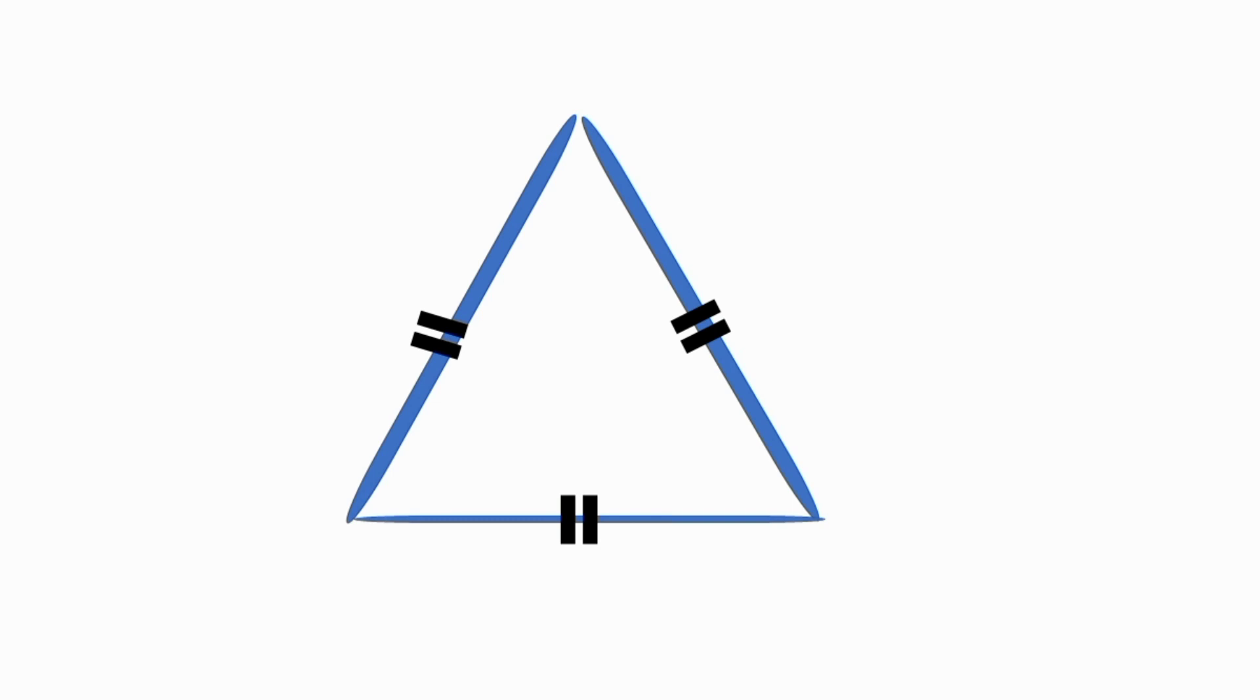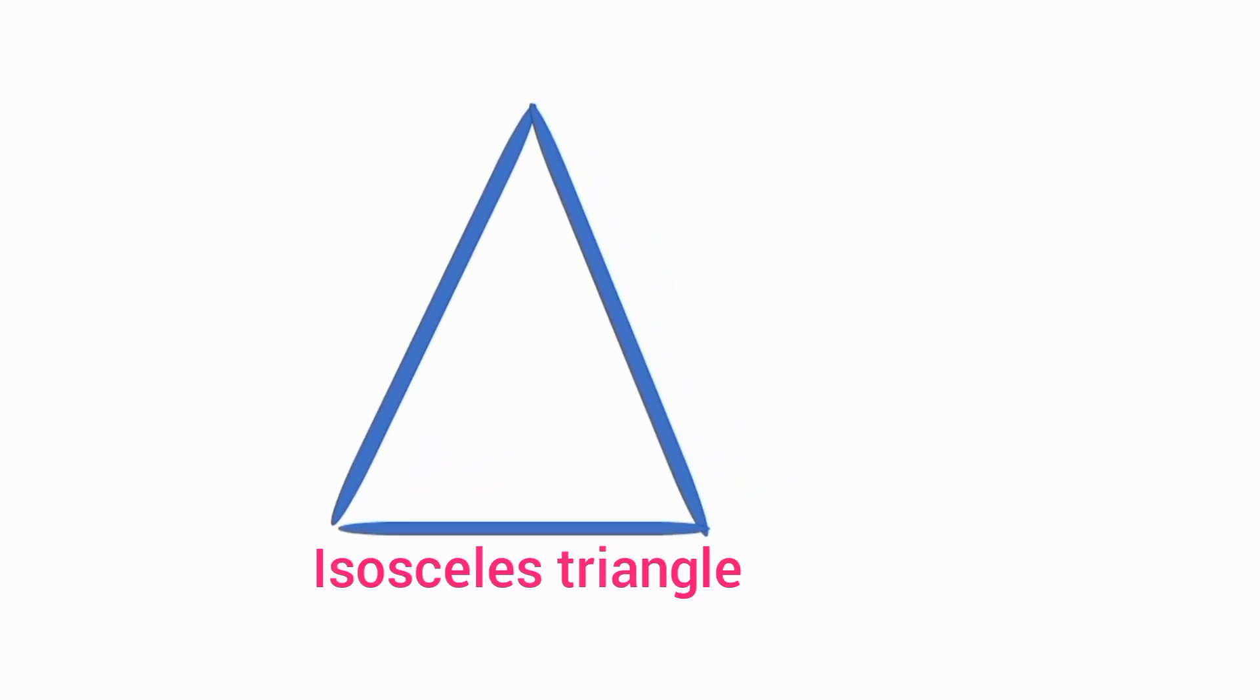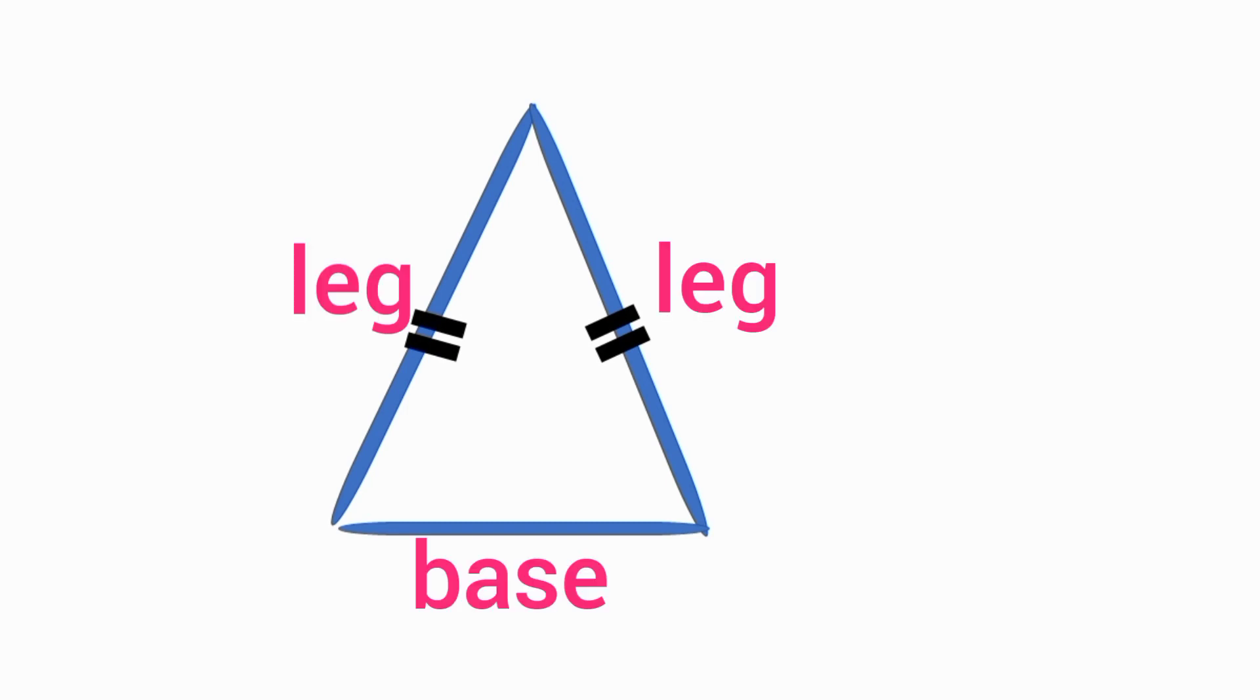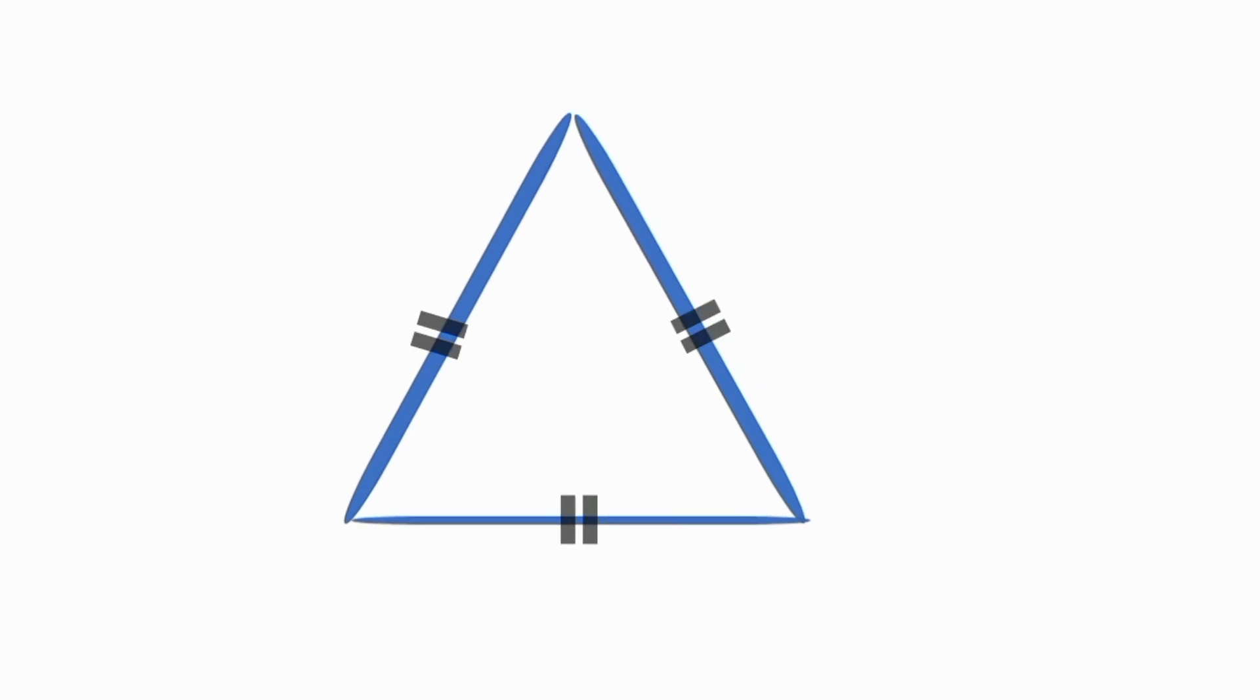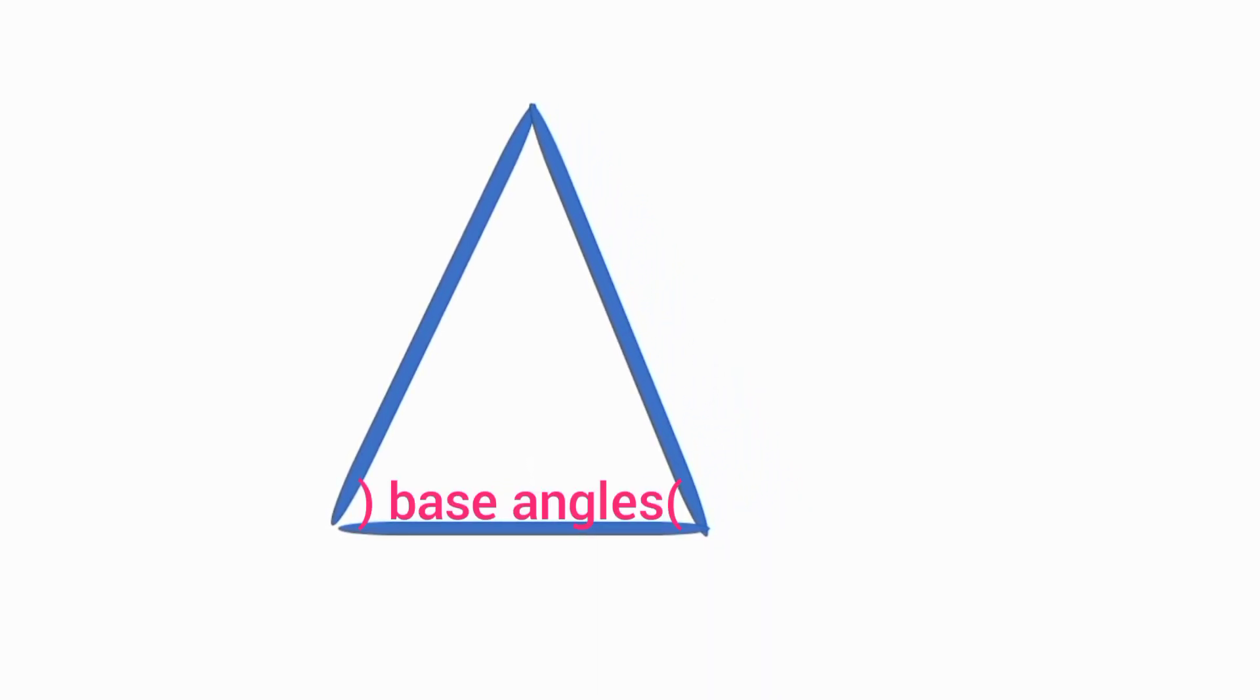Number three, isosceles triangles. An isosceles triangle is a triangle in which two sides are of equal length. The two equal sides are called legs and the third side is called the base. The base is the side opposite the vertex that forms the two equal angles, called base angles. The two equal angles are called vertex angles. The point at which the two equal sides meet is called the vertex.